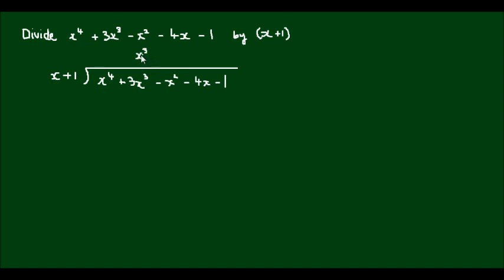So let's go forth and do that. x to the power of three multiplied by x is going to give me x to the power of fourth. x to the power of three multiplied by one is going to give me x to the power of three. And likewise with ordinary long division, I would subtract this new line from the line above. So I'm going to put it in parentheses with a minus sign at the front.